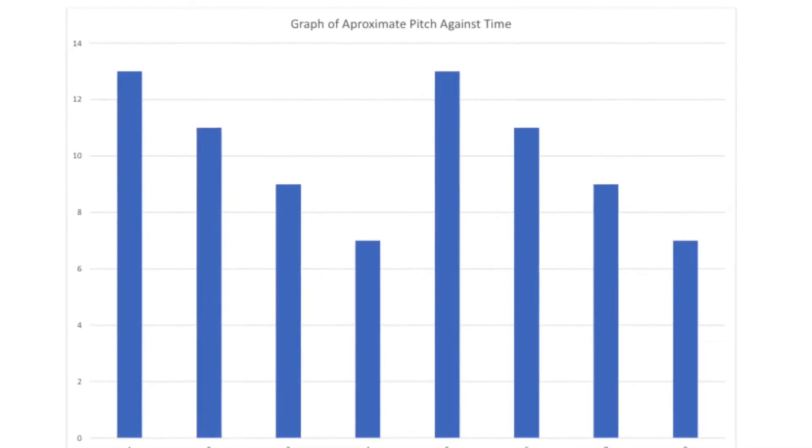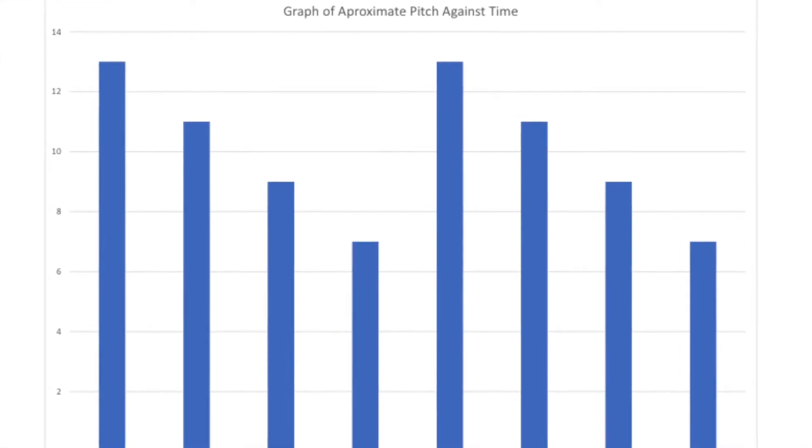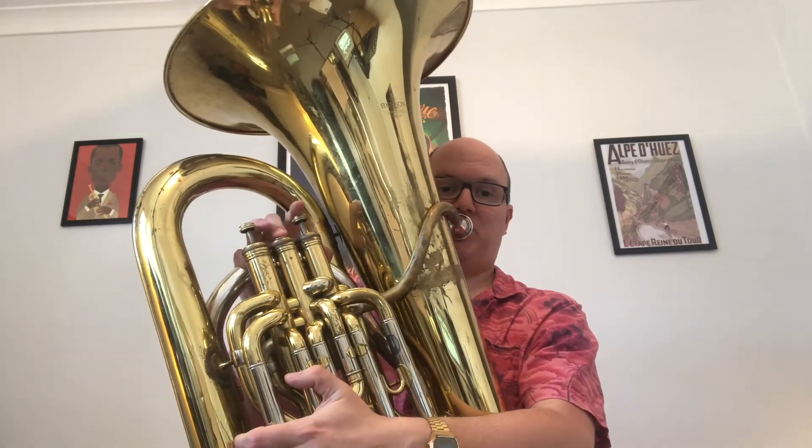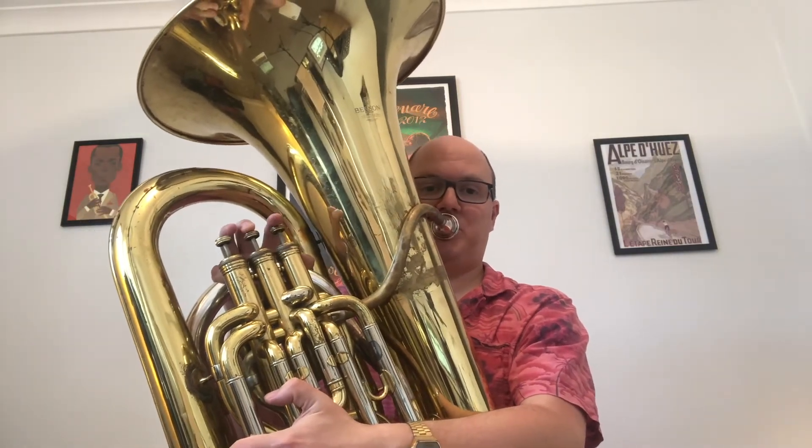We can even use a graph to show pitch. The next graph is a bar graph and it shows you four notes that I want you to play. On my tuba it would sound like this, for example. So we've now seen graphs for volume, graphs for speed, and graphs for pitch.